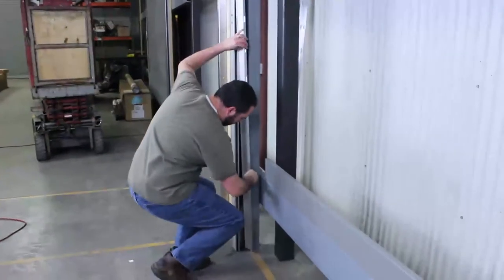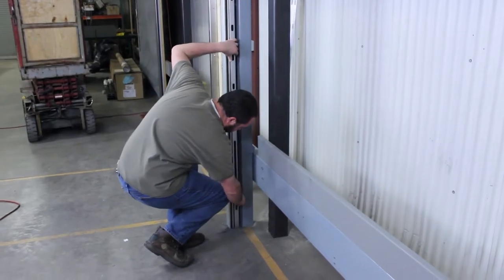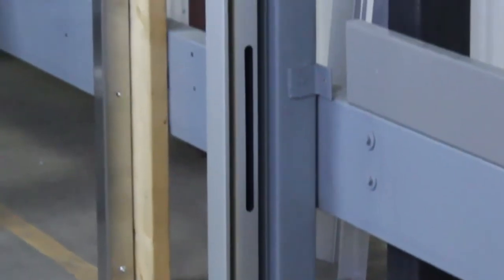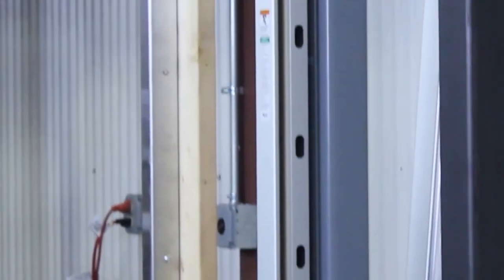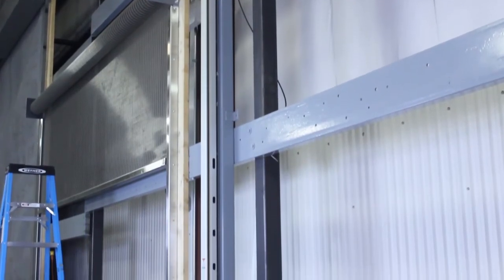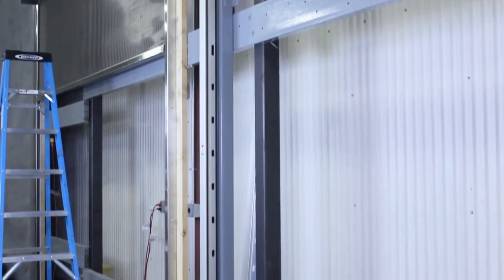The last step is to install the guide trim. It comes in two sections. The bottom section is slotted with the longest slot placed closest to the floor. This is so the light curtain will work. The top section is solid. Once the trim is installed, your sensor installation is complete.